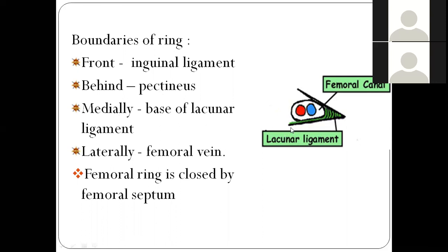Boundaries of the femoral ring: anteriorly, it is contributed by the inguinal ligament; posteriorly, the pectineus muscle; medially, the base of the lacunar ligament — which is the reflection of the inguinal ligament; laterally, a septum separating the femoral ring from the intermediate compartment containing the femoral vein. Overall, this ring is completely closed — it is obliterated by the presence of the femoral septum.